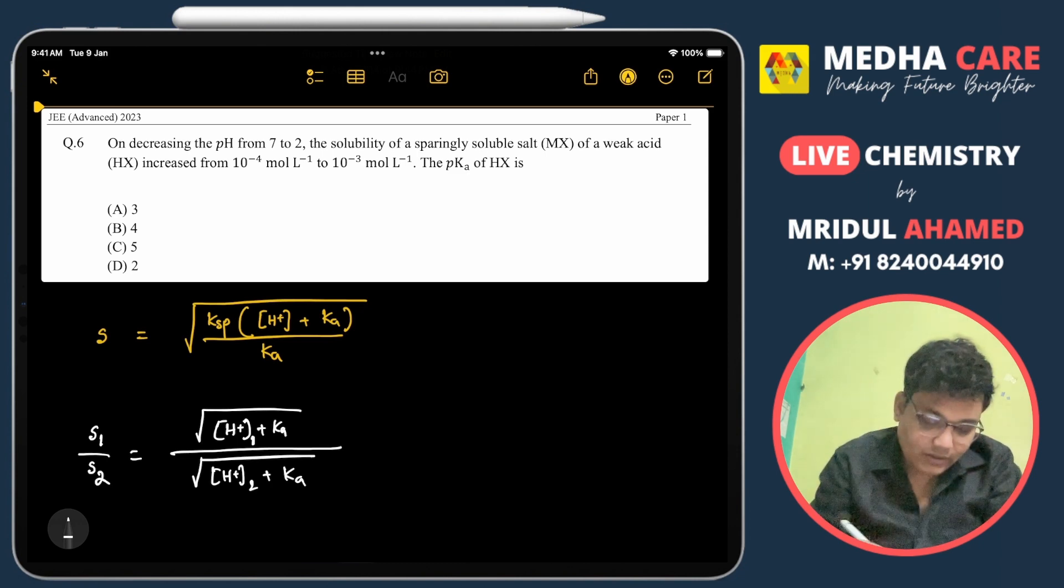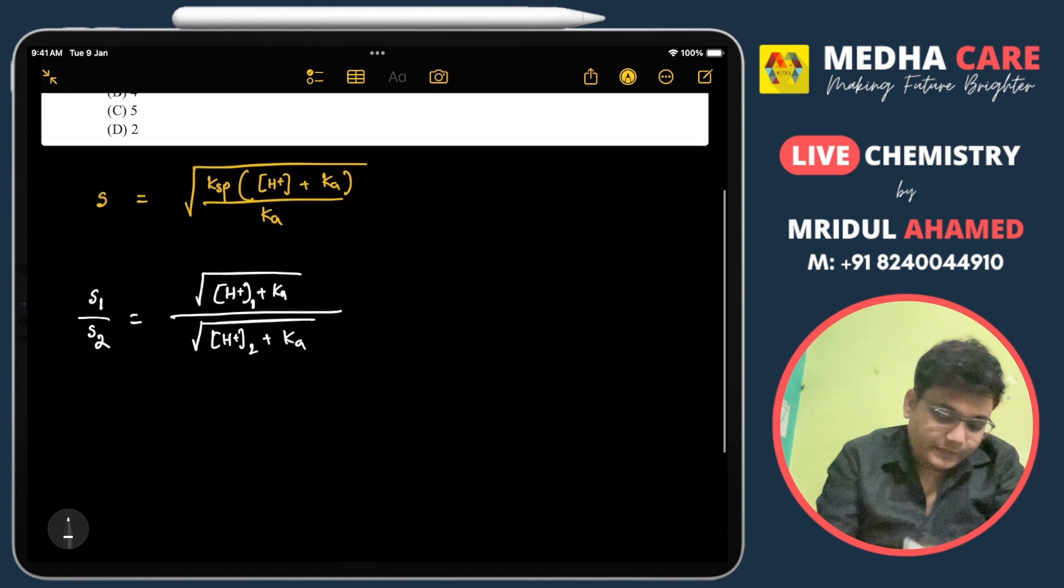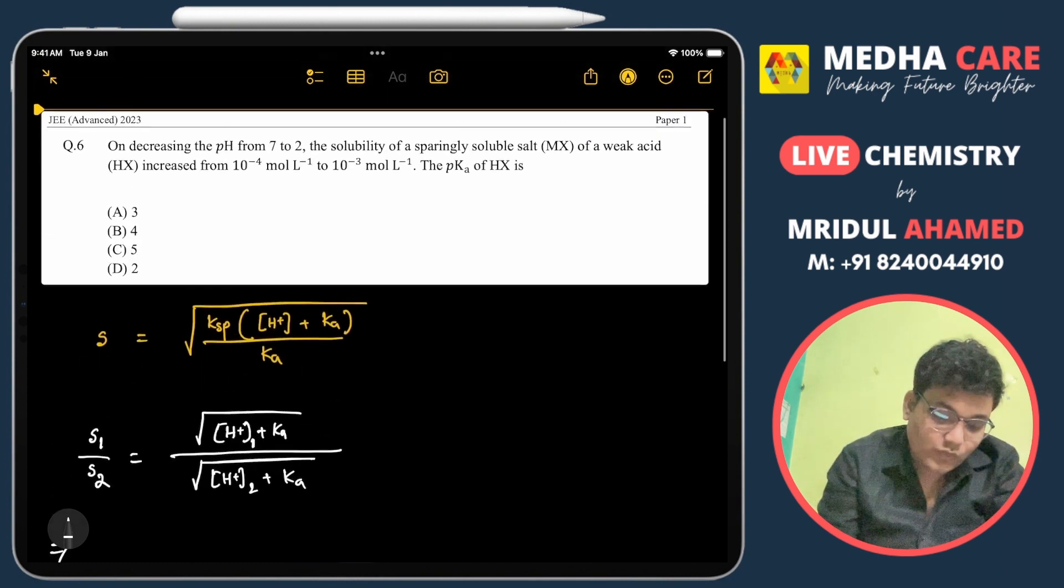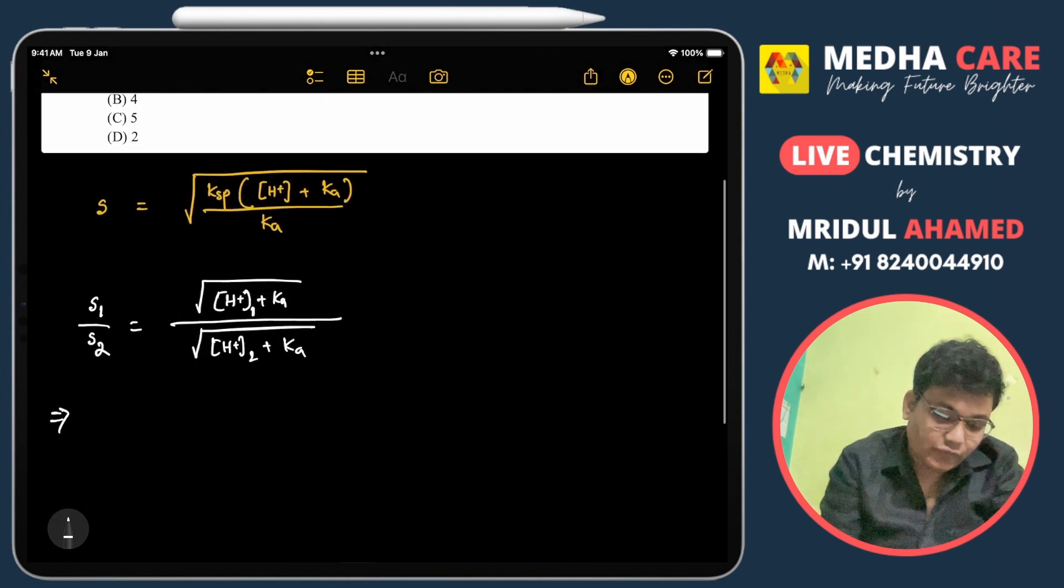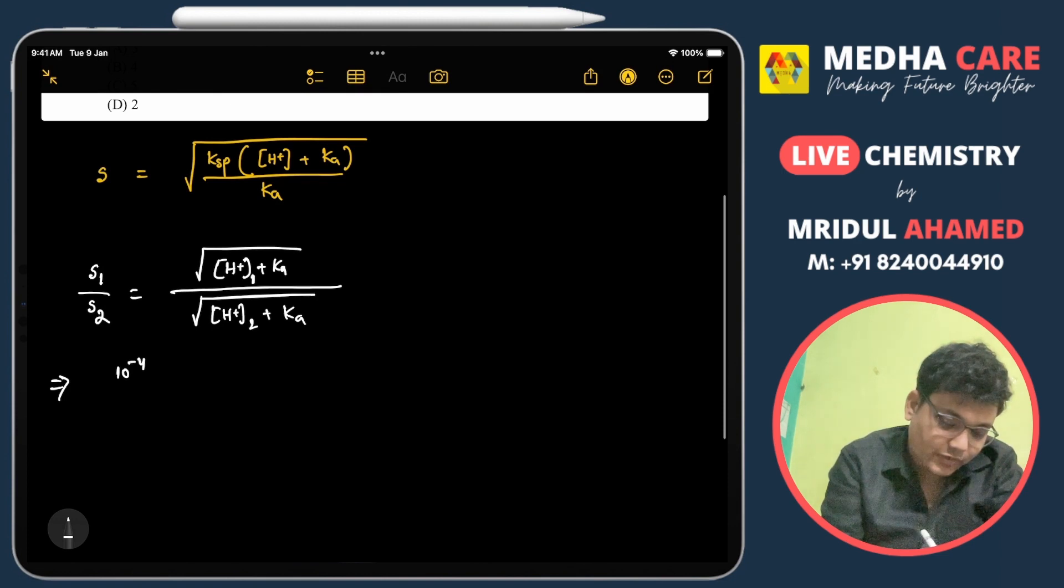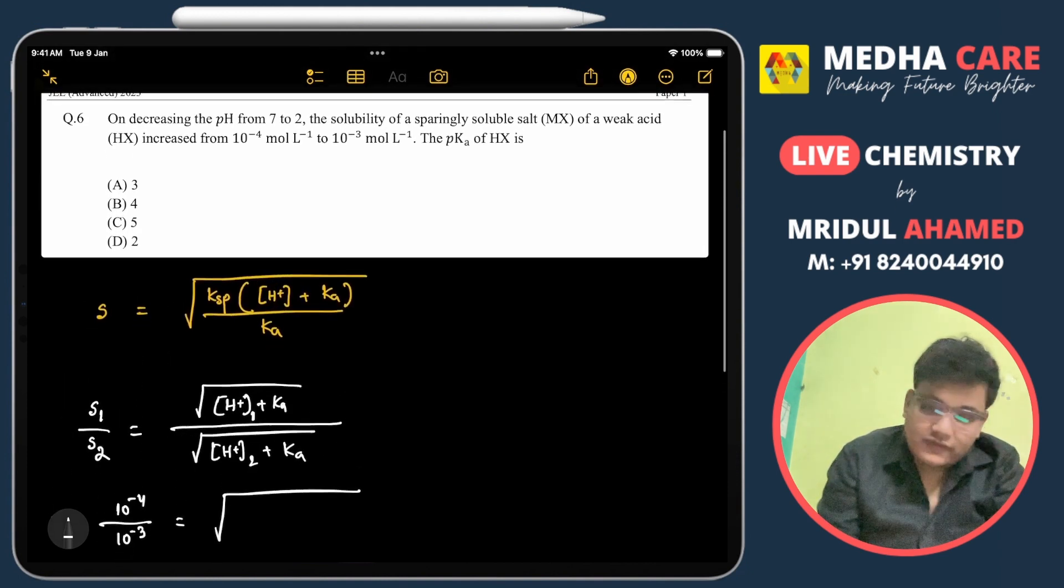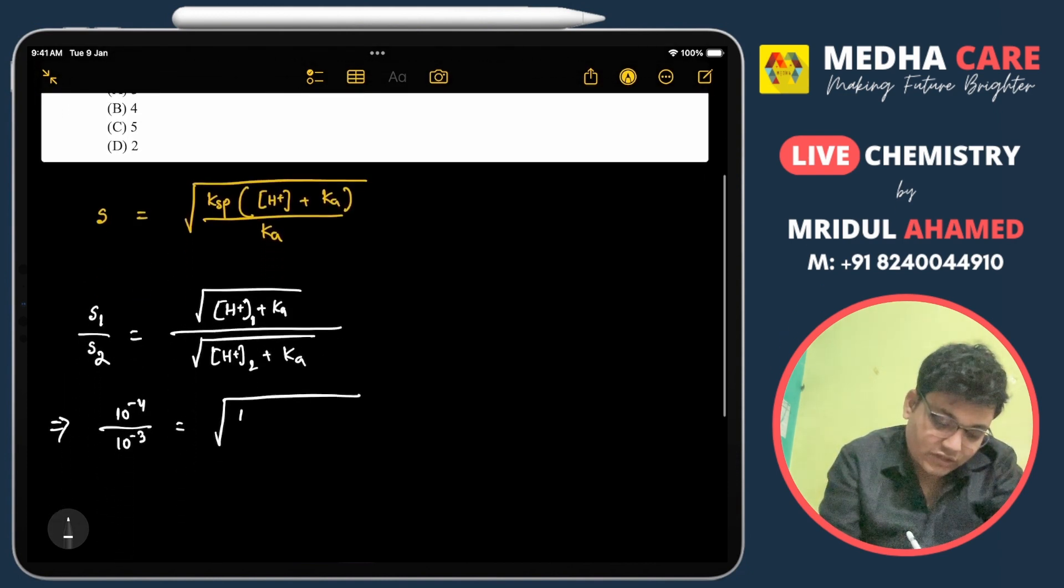Now if we solve this problem, S1 is 10^-4, S2 is 10^-3. pH 1 is 7, that means H+ concentration is 10^-7 plus Ka.